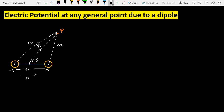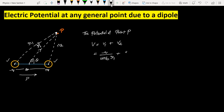The potential at point P is defined by both the negative charge q and the positive charge q. So the net potential at point P is V = v1 + v2, where v1 is the potential due to the negative charge: v1 = −q / (4πε₀ r1), and v2 is the potential due to the positive charge: v2 = q / (4πε₀ r2).